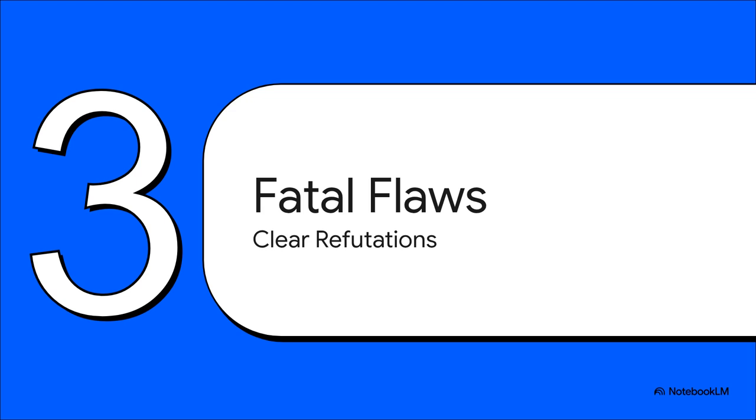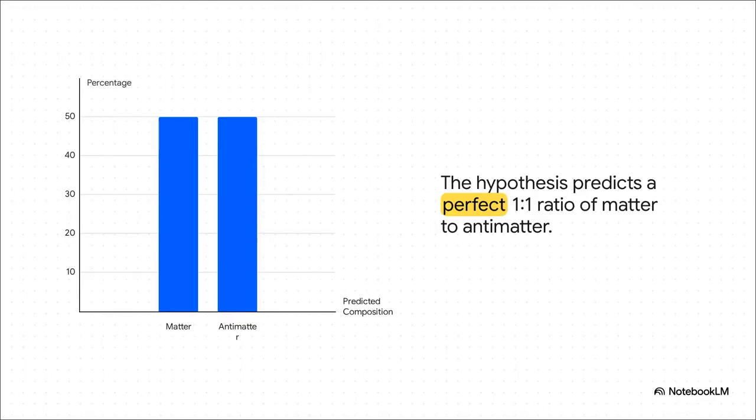But, as gorgeous as it is, it runs into some massive, universe-sized problems when you actually compare it to reality. Okay, so the hypothesis makes a crystal clear, testable prediction. If every forward-moving segment, an electron, must eventually loop back in time as a positron, then the universe as a whole should have a perfect balance. For every electron, there has to be a positron. A perfect 50-50 split between matter and antimatter.